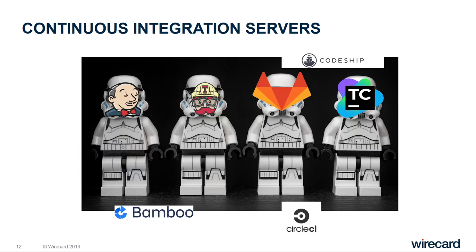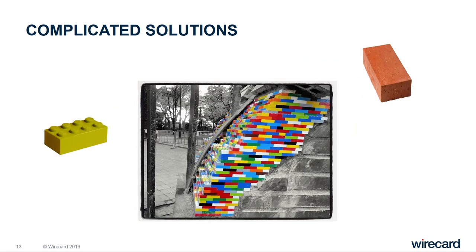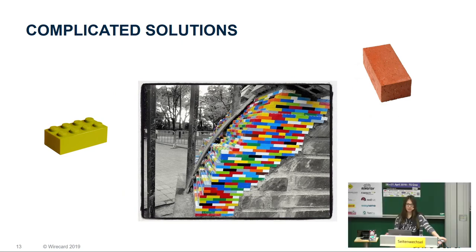There are many continuous integration servers available on the market — these are just some of them. If you are going to start and choose a continuous integration server, it's worth looking around and seeing what each of them brings. One thing that can happen to you is overcomplicated setups — choosing a complicated solution when you can go for something simple. From my experience, we had a project hosted on GitLab online, and instead of going for the provided GitLab CI, which would allow us with a couple of lines of YAML code to have a ready solution with CI and CD running, we decided to host Jenkins ourselves, configure it, and run it.